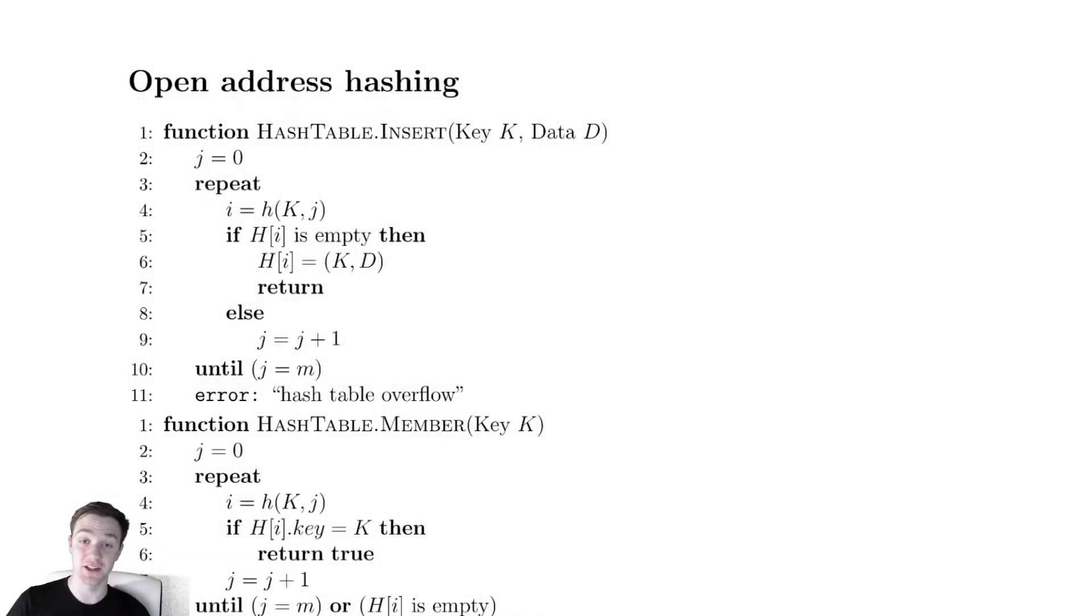An alternative method for dealing with collisions is open address hashing. The idea is if we have a hash table with various locations, and some are occupied, when we try to insert something and hit an occupied location, we do some mathematical operation to find a new location and insert the element there instead. That's the idea behind open address hashing.